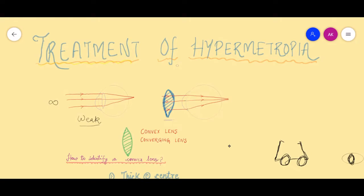When we add a convex lens in front of the eye — a convex lens, as we know, is a converging type of lens — the rays of light passing through this convex lens will start converging much earlier. Because of this extra converging ability, the image will now be formed on the retina and the patient will be happy. This is how we treat hypermetropia.